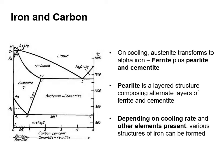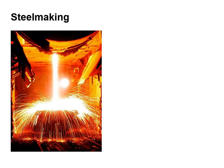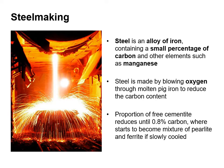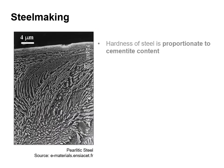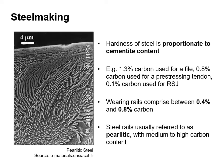Depending on cooling rate and other elements present, various structures of iron can be formed. Steel is an alloy of iron containing a small percentage of carbon and other elements such as manganese. Steel is made by blowing oxygen through molten pig iron to reduce the carbon content. The proportion of free cementite reduces until 0.8% carbon, after which it becomes a mixture of pearlite and ferrite if slowly cooled. In steelmaking, the hardness of the steel is proportionate to the cementite content. Wearing rails comprise between 0.4% and 0.8% carbon, and steel rails are usually referred to as pearlitic with a medium to high carbon content.